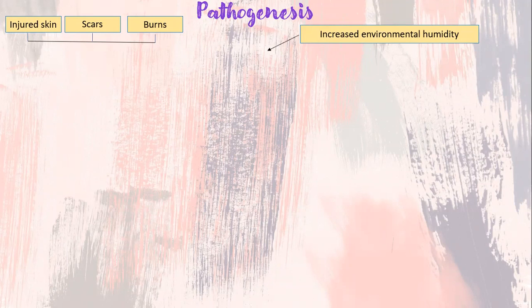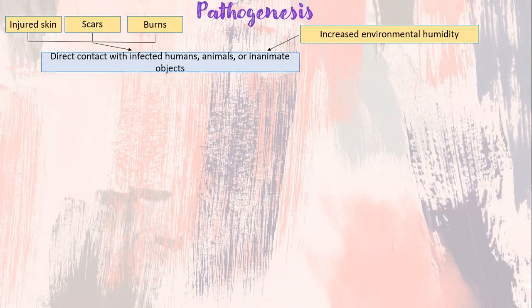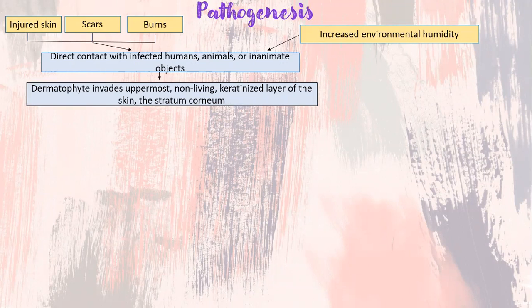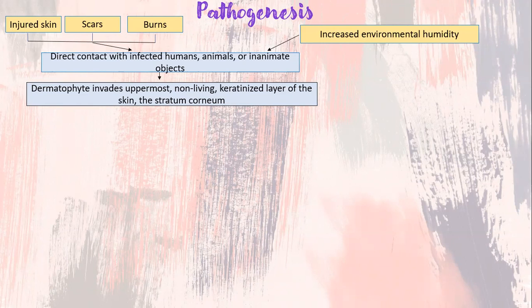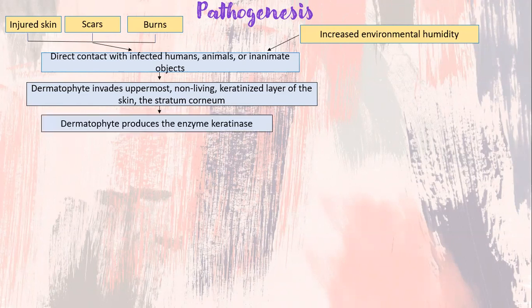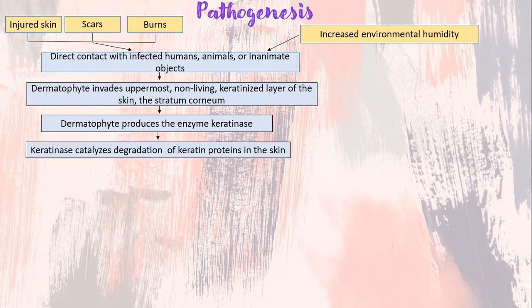A person can get tinea infection through direct contact with infected humans, animals, or inanimate objects. The dermatophytes invade the uppermost non-living keratinized layer of the skin, which is the stratum corneum. Then, the dermatophyte produces the enzyme keratinase, which is a particular class of extracellular proteolytic-inducible enzyme with the capability of degrading insoluble keratin substrates. Keratinase then catalyzes degradation of keratin proteins in the skin.